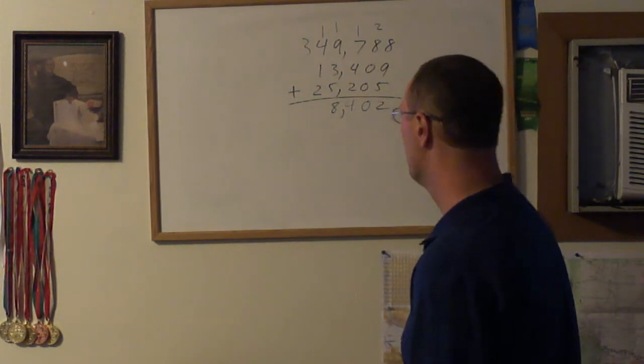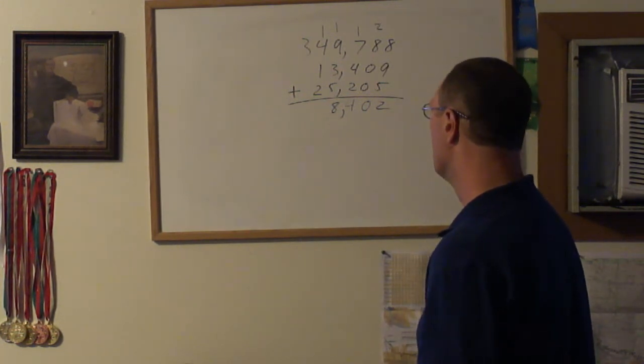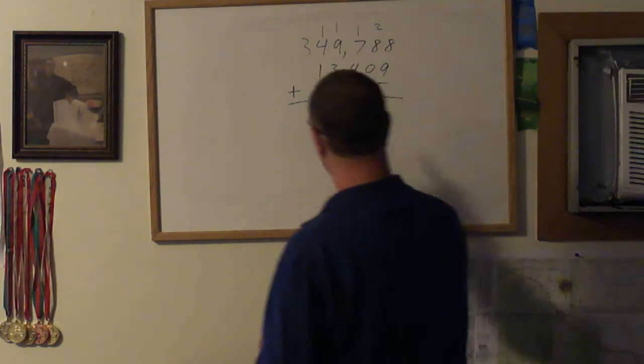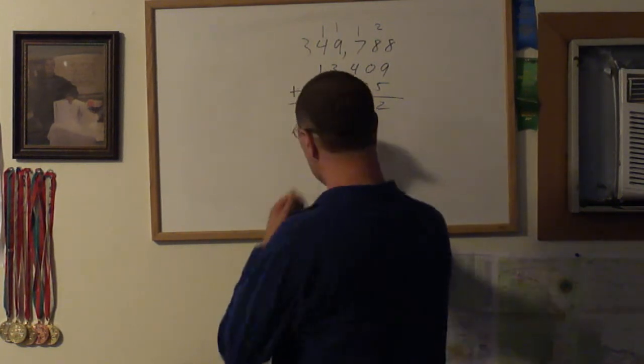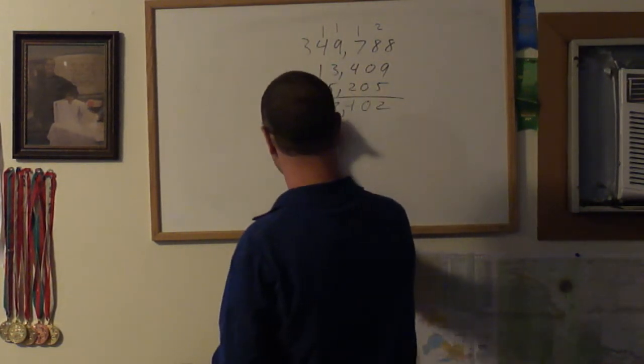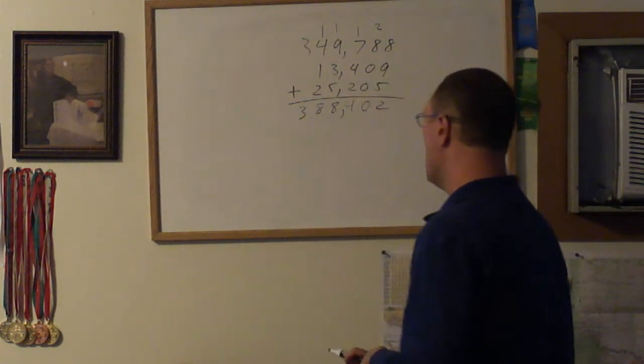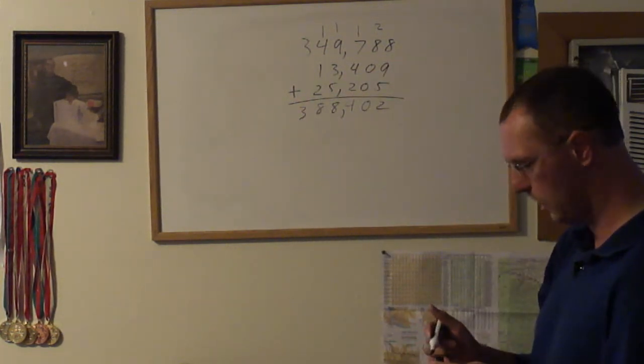4 plus 1 equals 5, plus 2 equals 7. 5 plus 1 equals 8. And the 3 is right there: 388,402. Alright!